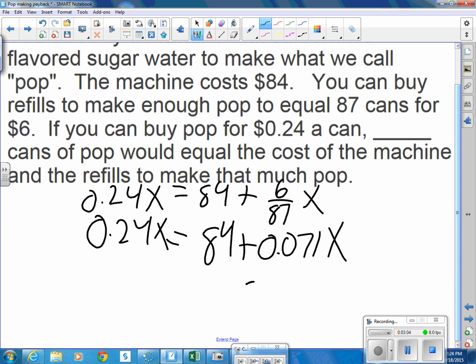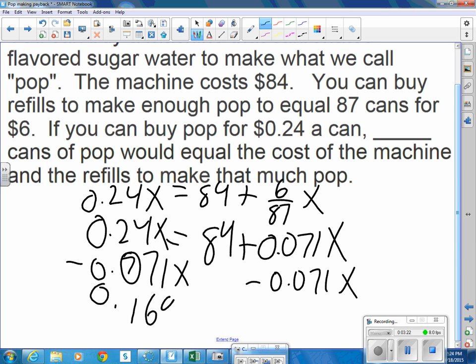If I subtract, solving this, I subtract the 7 cents per can. That gives me 0.169x equals 84.